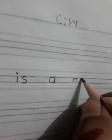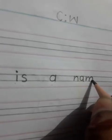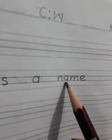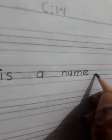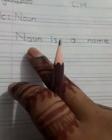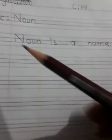Name — N-A-M-E. So the full sentence is: Noun Is A Name. This is the only sentence we have to write, and then put a full stop at the end. Noun Is A Name — noun ko hum noun kehte hain.